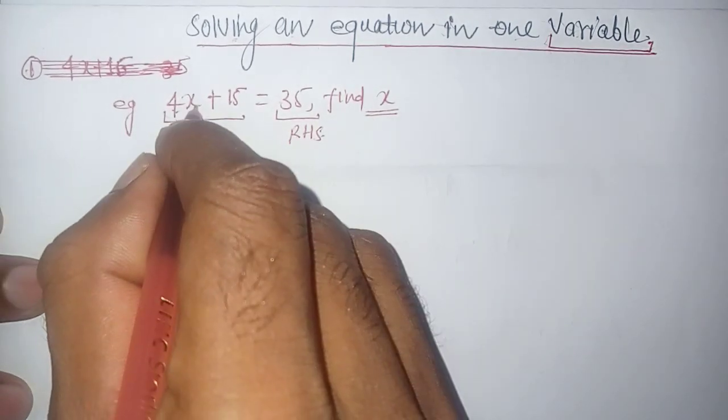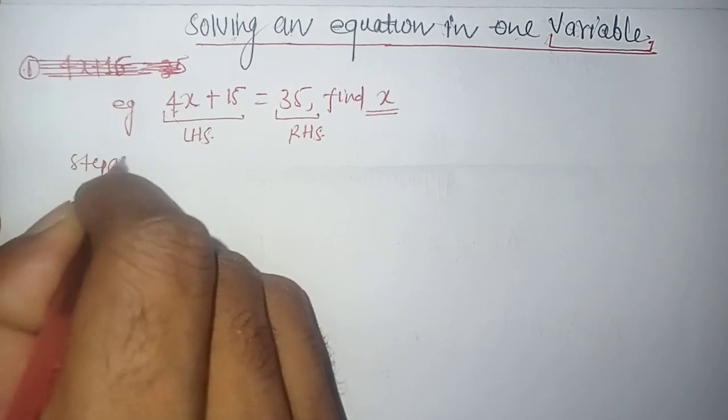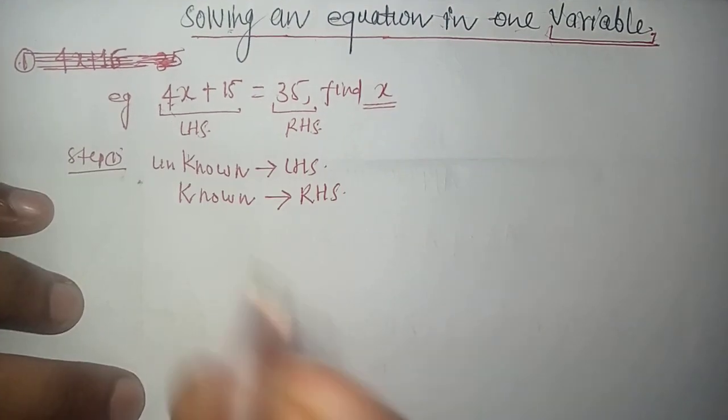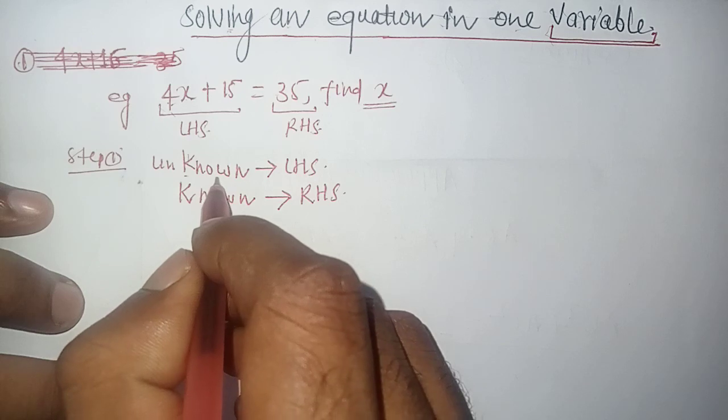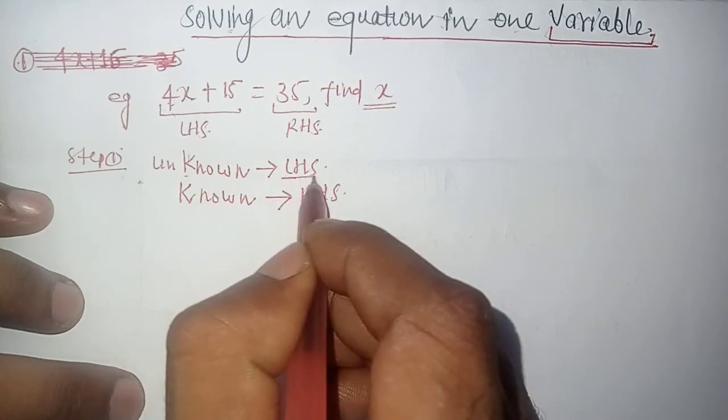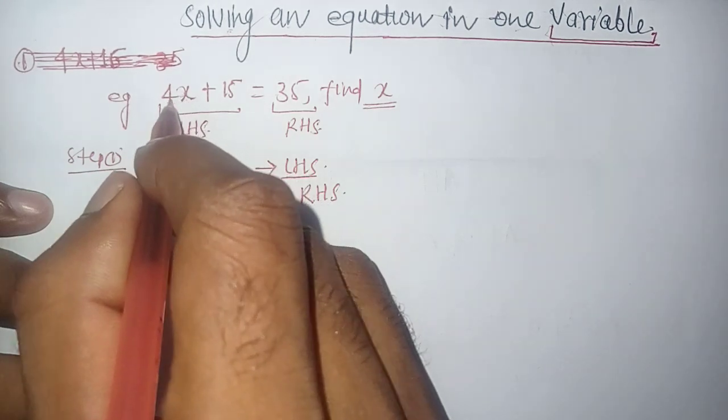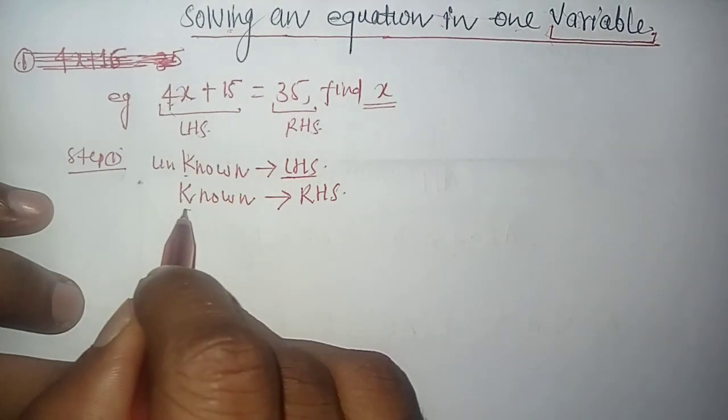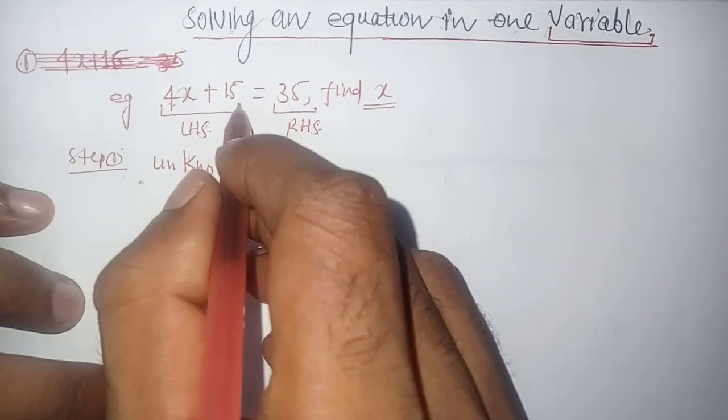Step first: what is unknown should be on the left hand side, and what is known or constant should be on the right hand side.